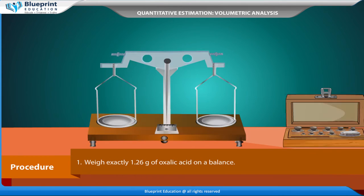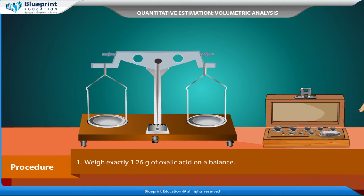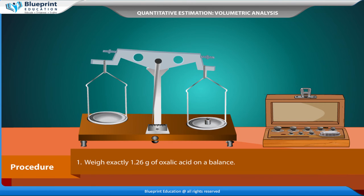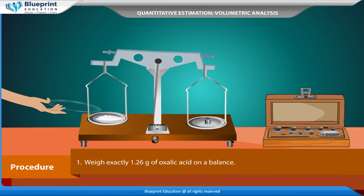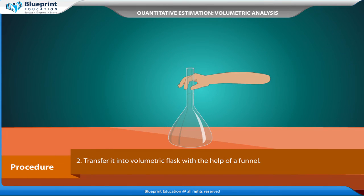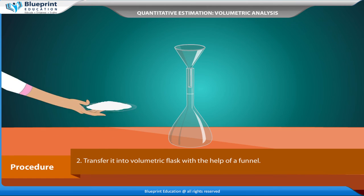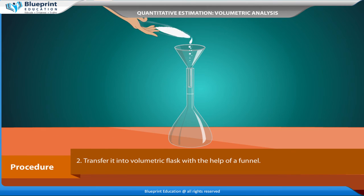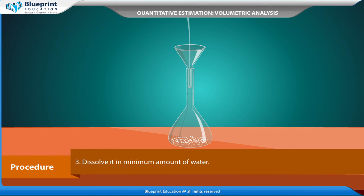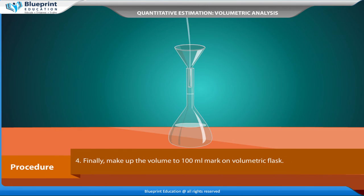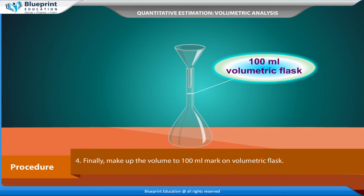Procedure: Weigh exactly 1.26 grams of oxalic acid on a balance. Transfer it into a volumetric flask with the help of a funnel. Dissolve it in a minimum amount of water. Finally, make up the volume to the 100 ml mark on the volumetric flask.